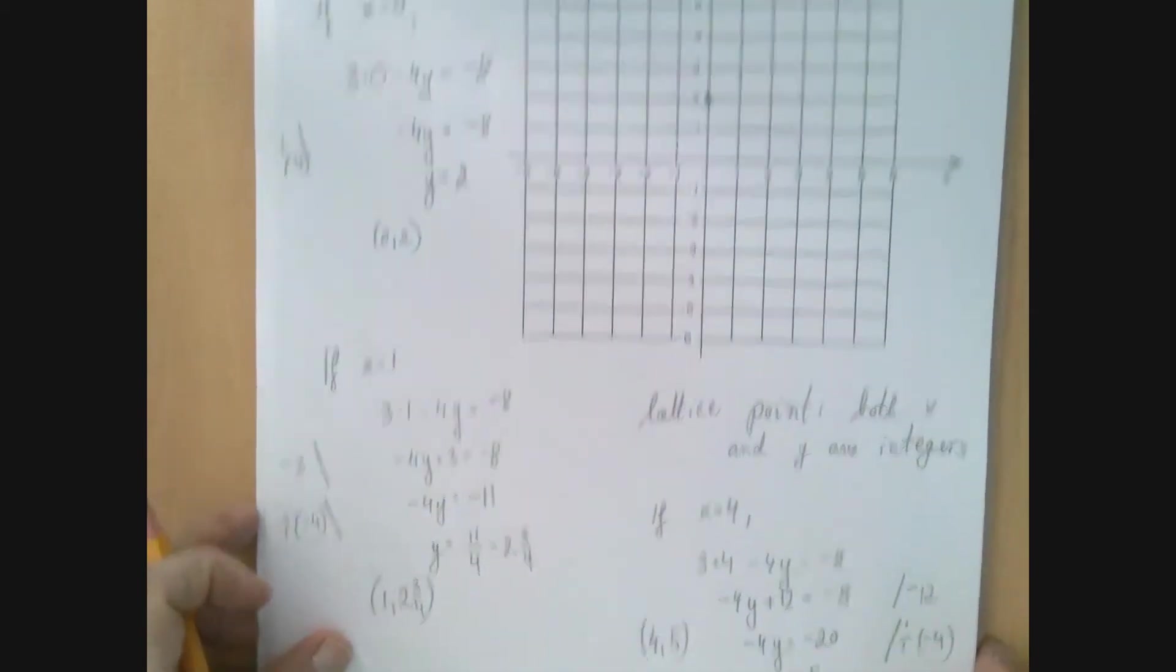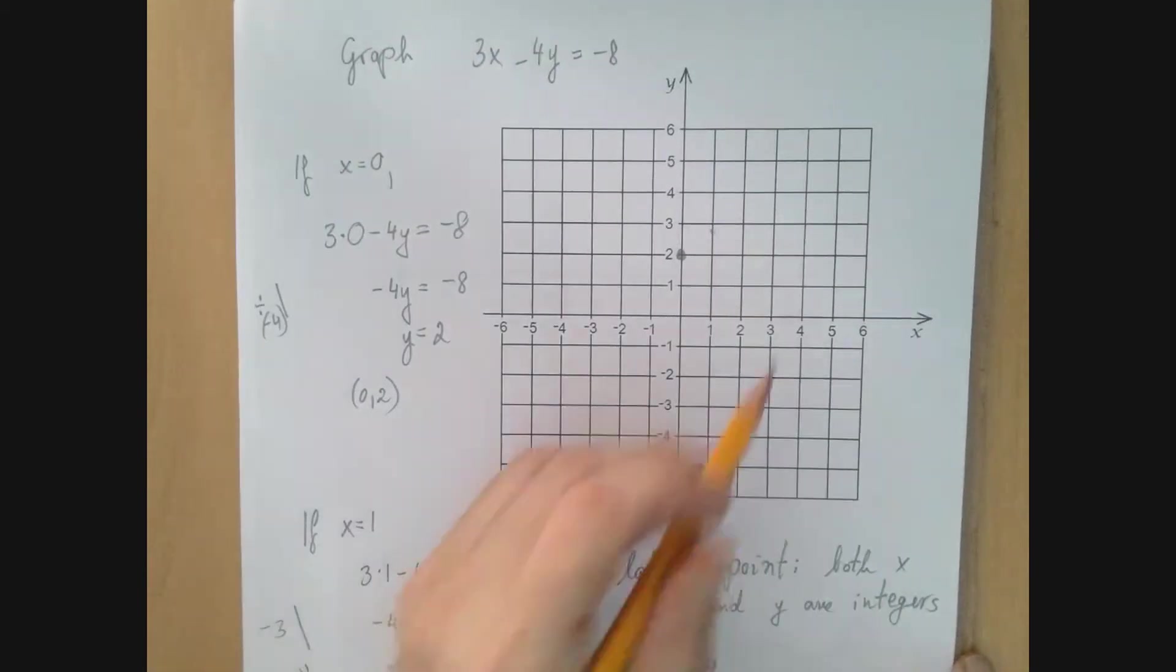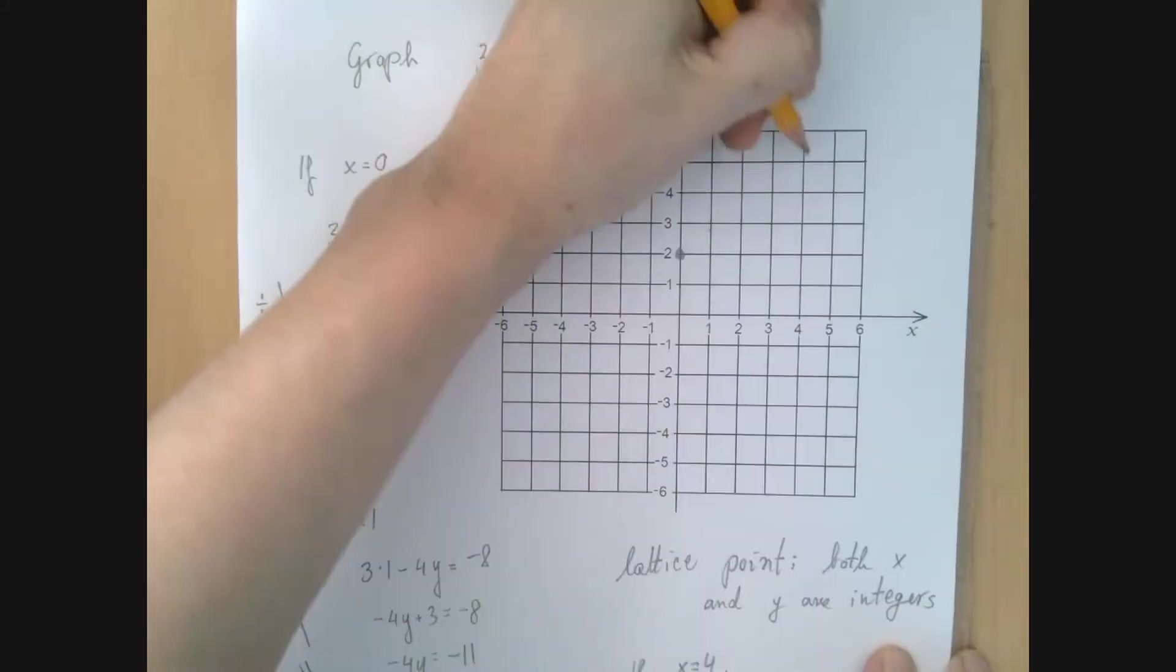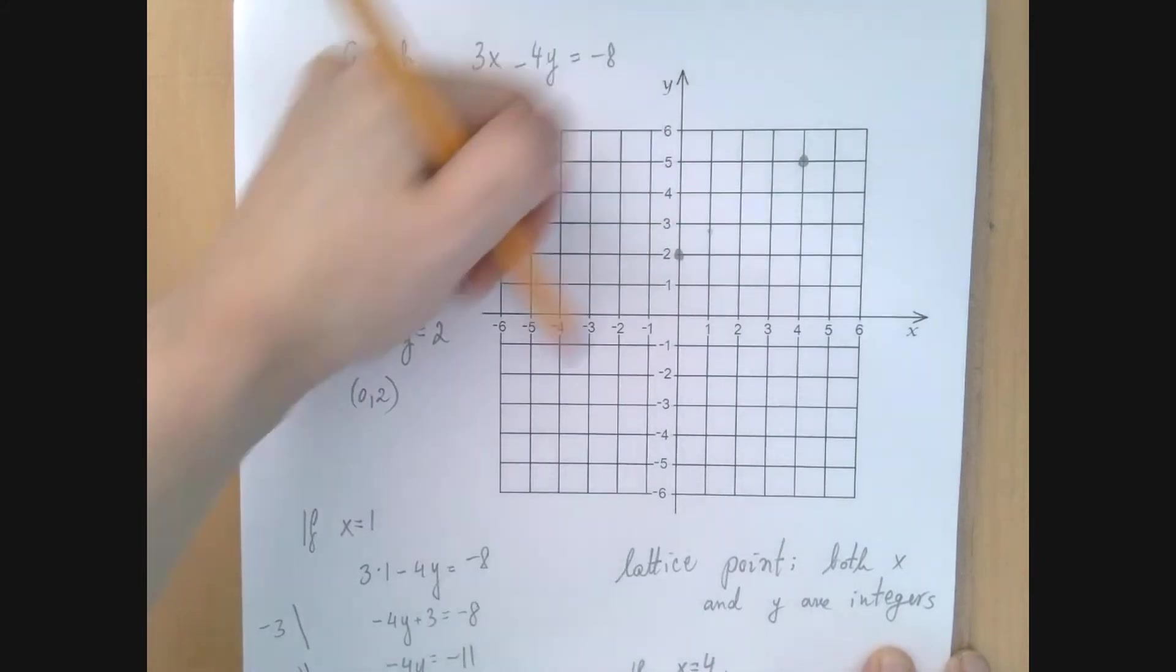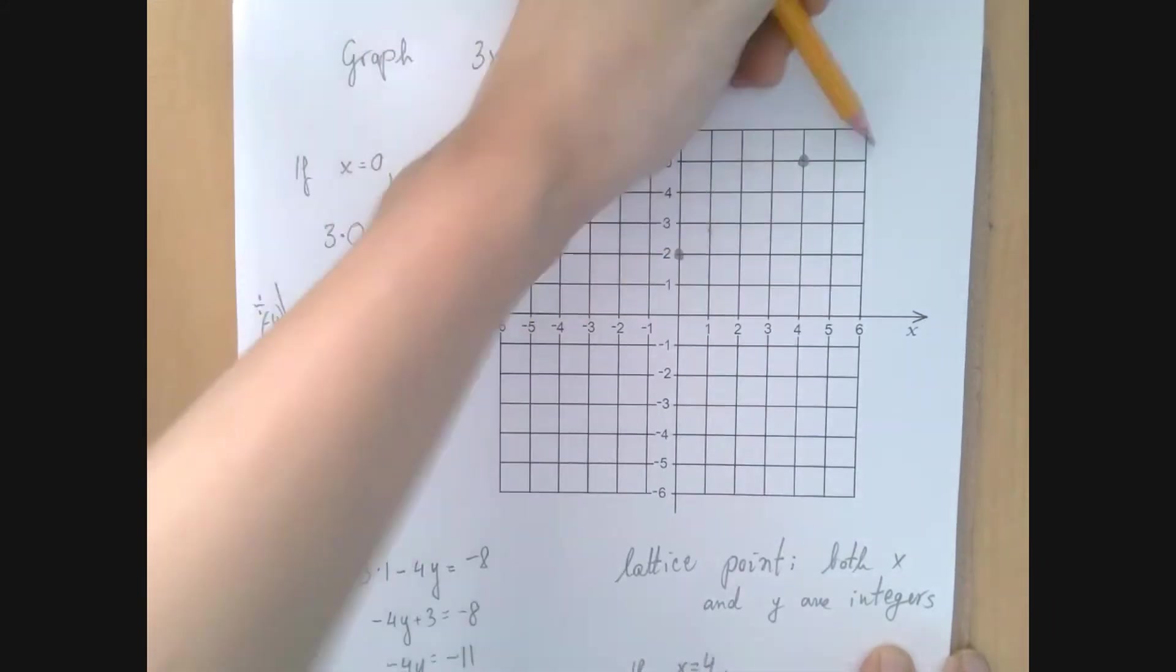So let's graph that. If x is 4, then y is 5. See, now it shows that the point that wasn't so nice fits. It looks like our line is going to look somewhat like this.